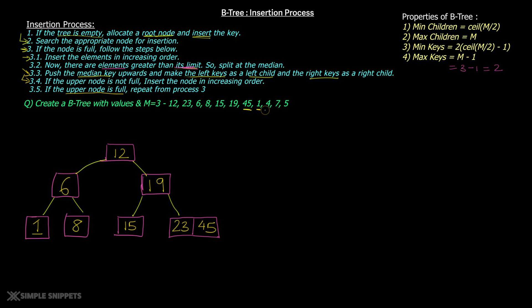Now let's insert 4. Since 4 is smaller than 12, we go to 6. Since 4 is smaller than 6, we go one level down and insert 4 directly — there's one more room in the left child of 6, which has only 1. Now let's insert 7. Since 7 is smaller than 12 but greater than 6, we go inside the right child of 6. There's one more room, so we insert 7 alongside 8 in proper ascending order. This node is now completely occupied.